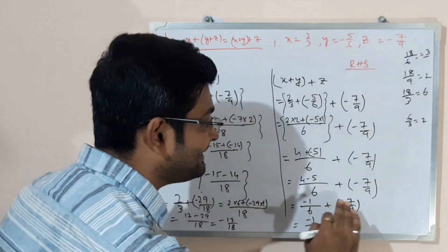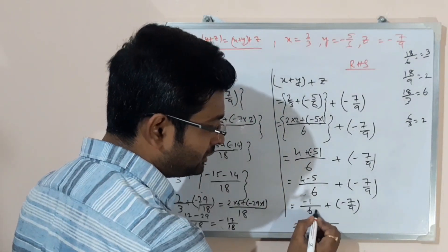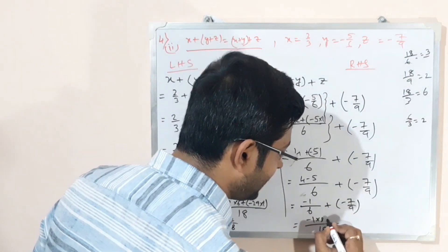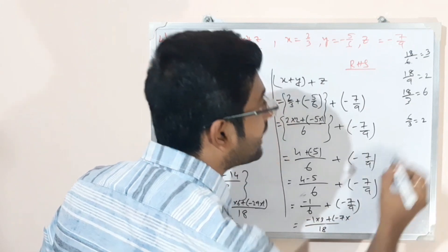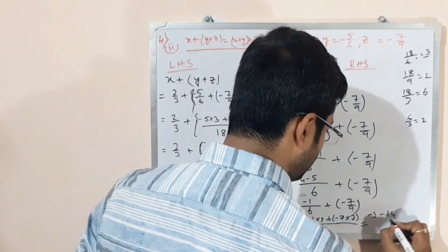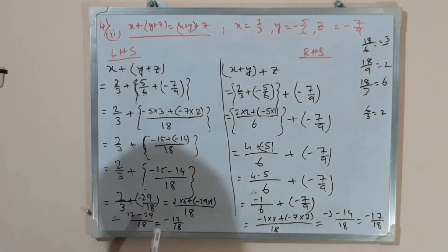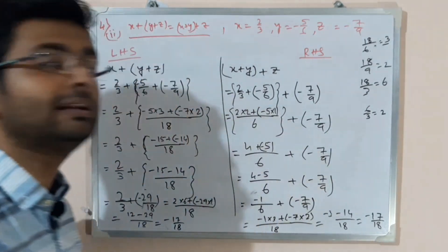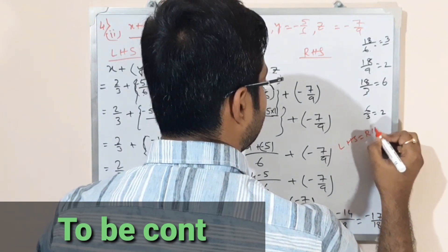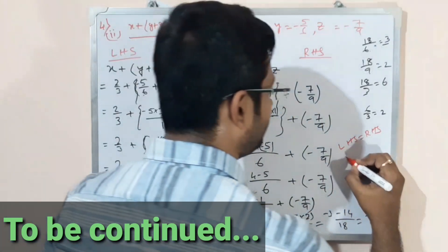That bracket gives 4 minus 5, which is minus 1 over 6, then plus (minus 7 by 9). LCM of 6 and 9 is 18. Denominator 6: divide 18 by 6 to get 3, so minus 1 times 3. Plus bracket minus 7, and 18 by 9 gives 2, so times 2. That is minus 3 minus 14 by 18, which equals minus 17 by 18. LHS also equals minus 17 by 18, so LHS = RHS — verified.